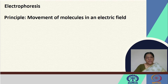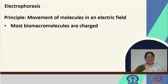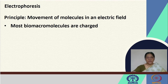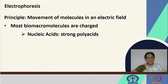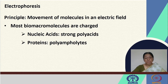Another very common technique used is electrophoresis, where we are looking at the movement of molecules in an electric field. This is extensively used to determine the molecular weight of proteins. Most biomacromolecules are charged and because of their charge they will move in an electric field if subjected to one. For example, nucleic acids are strong polyacids. We have proteins that are polyampholytes. We know that each protein has an isoelectric point.